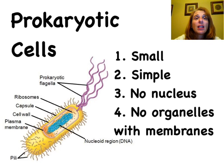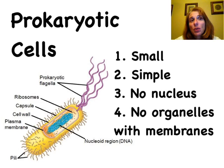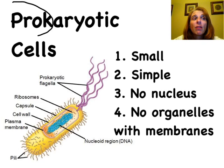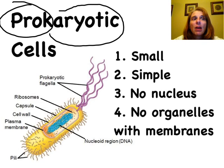Prokaryotic cells are very small. They came first before eukaryotic cells. If you look at the word prokaryotic, 'pro' means before, and 'karyote' is talking about the nucleus — it literally means kernel or nugget.